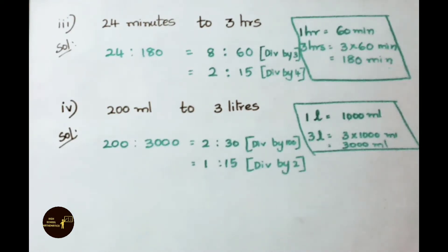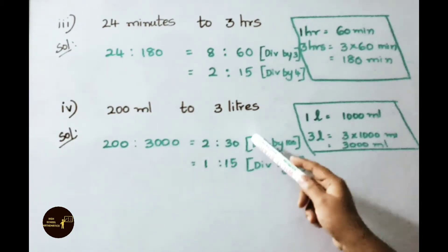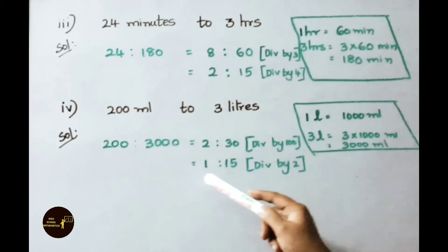We can simplify this ratio on dividing the both terms by 100. Two zeros were removed on both terms. So the ratio is 2 is to 30. This ratio can be simplified further by dividing the both terms by 2. 2 table 2 is 1 times. 2 table 30 is 15 times. So the ratio is 1 is to 15. Therefore the simplest form of the given ratio is 1 is to 15.